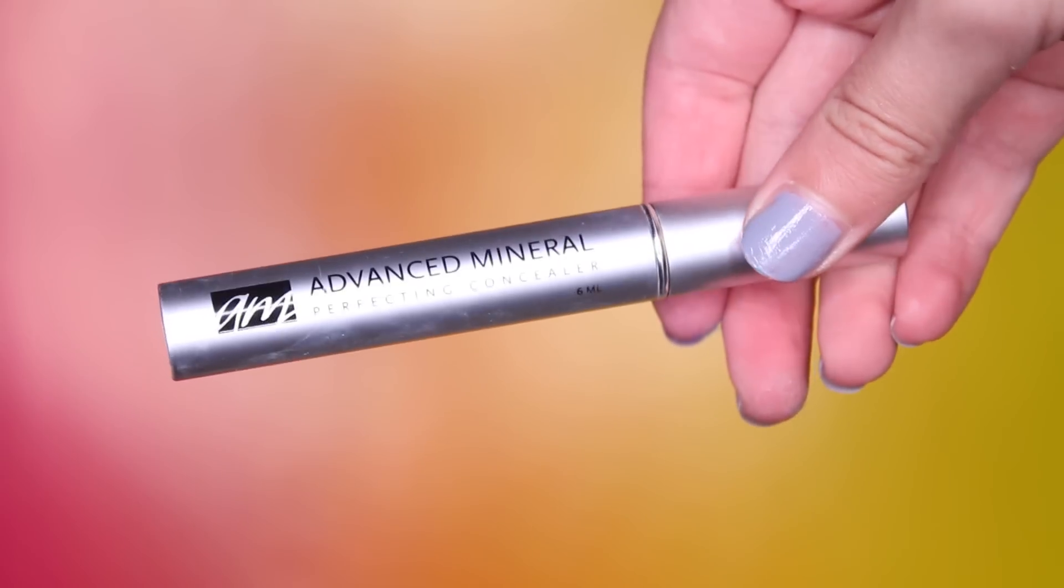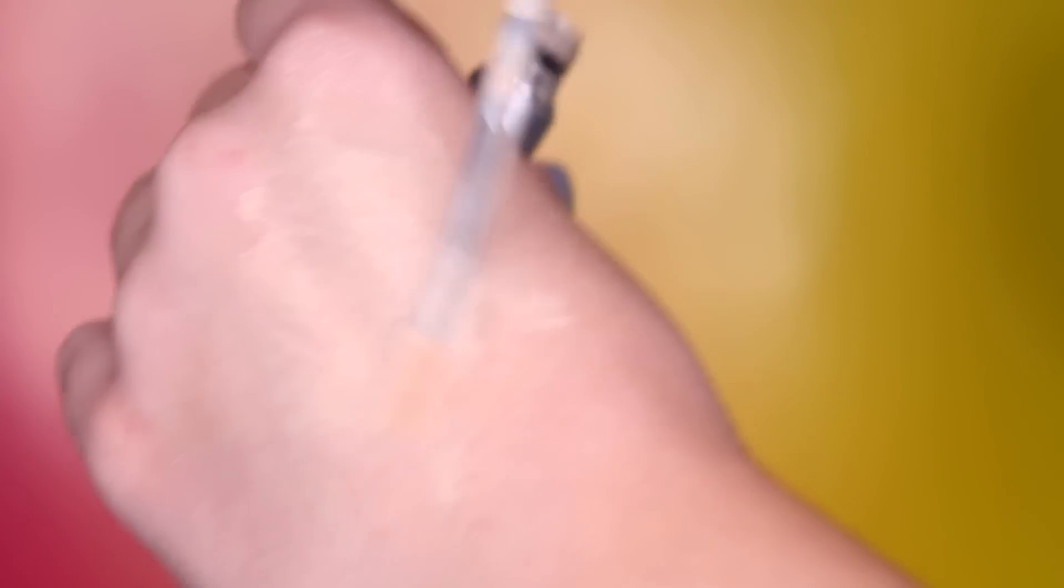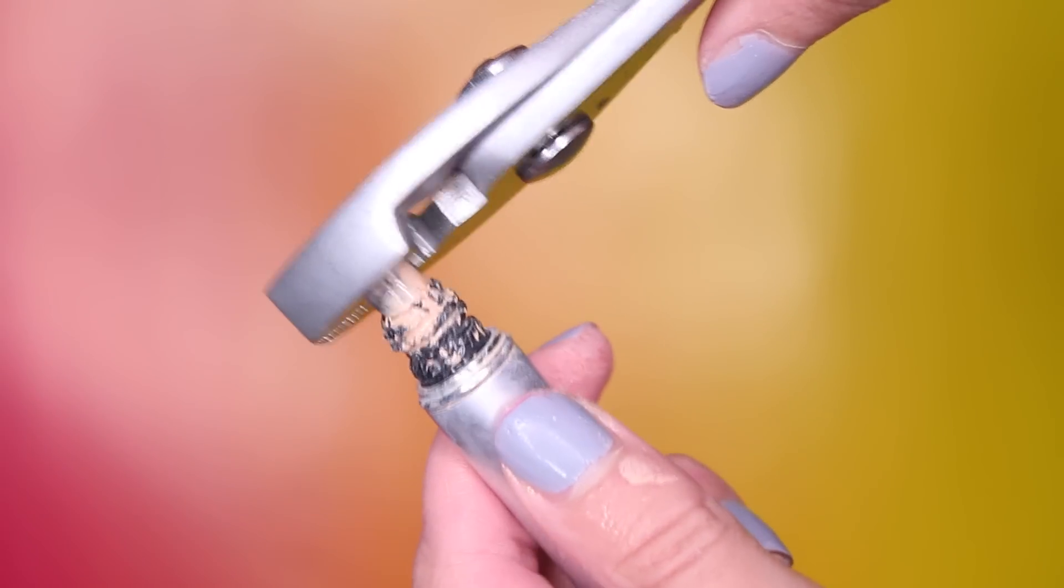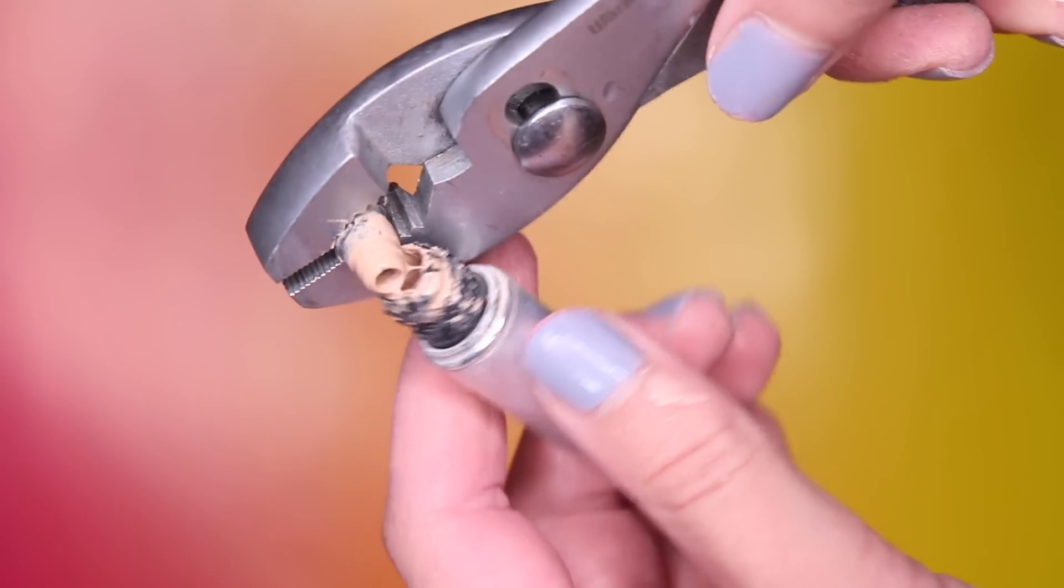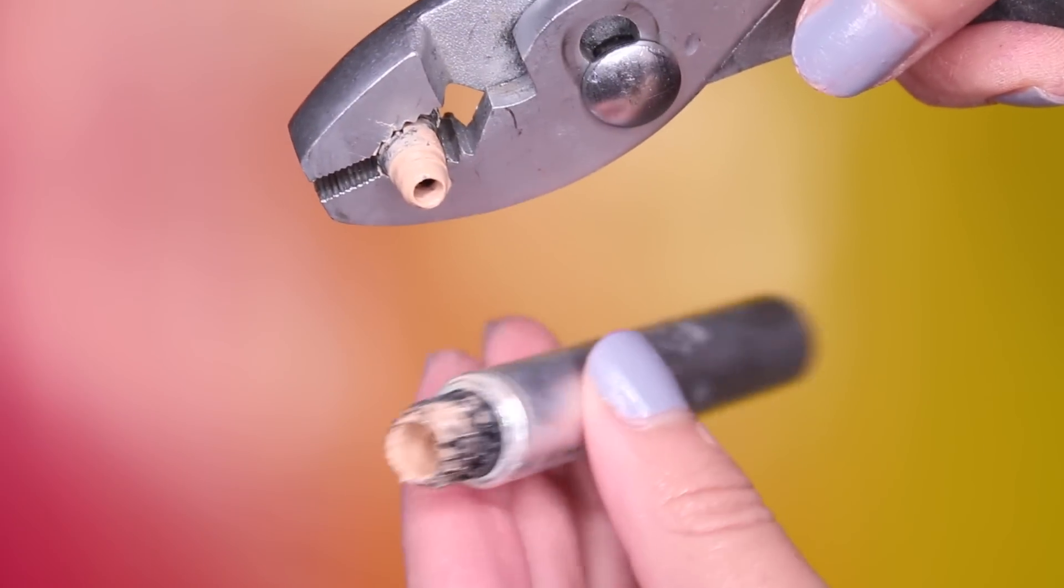For the white out concealer, all you're going to need to start off with is an empty or old concealer. Mine was basically all gone. And then you're going to want to take some sort of pliers and take out that little rubber piece on the outside of the concealer bottle. It just makes it a lot easier to clean out the concealer.